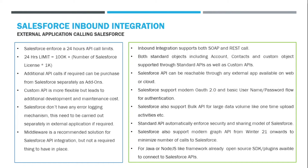Salesforce also supports the Graph API from Winter '21 onwards. With the Graph API you can insert multiple object records in one go — for example, Account, Contact, and Opportunity records simultaneously. To call the Salesforce API, there are already out-of-the-box SDKs available for commonly used platforms like Java and Node.js, but you can also write one from scratch if needed.